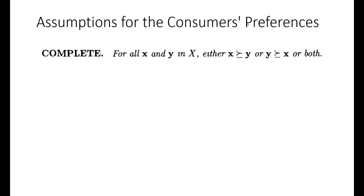In this video lecture we are going to discuss the various assumptions made by consumer preferences. The first assumption is completeness. Suppose we have two bundles x and y.